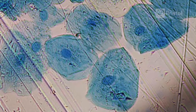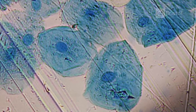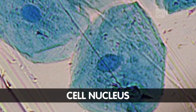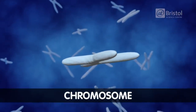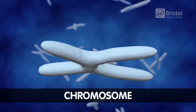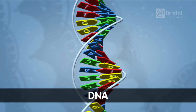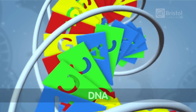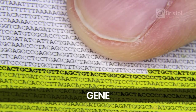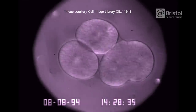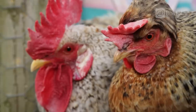We've magnified this image by 200 times, and if we look at this dark spot just here, this is the nucleus of the cell. This is where we can find something called chromosomes. Chromosomes are made of DNA, which is divided into sections called genes. These genes contain the instructions for living things — everything from making new cells to the color of feathers.